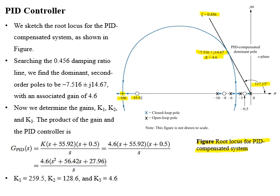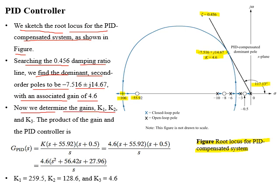After designing the PI controller, we will sketch the root locus for the PID-compensated system as shown in the figure. Along the line of constant damping ratio, the dominant second-order poles are located at minus 7.516 ± j14.67, with associated gain of 4.6. From this, we determine the gains of the PID controller: K1, K2, and K3. The product of the gain and the transfer function of the PID controller gives G_PID(s), where K1 = 259.5, K2 = 128.6, and K3 = 4.6.